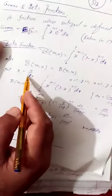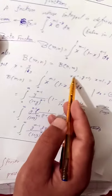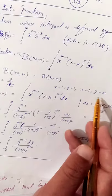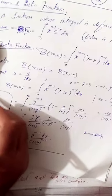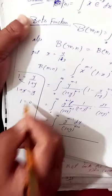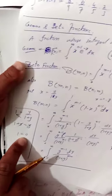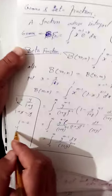To transform the Beta function, we substitute x = y/(1+y). The limits change: when x = 0, y = 0; when x = 1, y tends to infinity — since setting x = 1 gives 1+y = y, which is impossible for finite y, confirming y → ∞. This substitution transforms the Beta function integral accordingly.